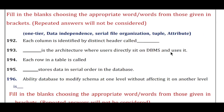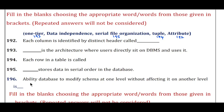Question 192: Each column is identified by a distinct header, which is called — the answer is attribute. Question 193: Dash is the architecture where users directly sit on the DBMS and use it — the answer is one-tier. Question 194: Each row in a table is called — the answer is tuple. Question 195: Dash stores data in serial order in the database — the answer is serial file organization. Question 196: The ability of the database to modify schema at one level without affecting another level is called — the answer is data independence.